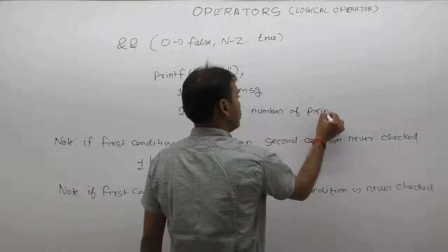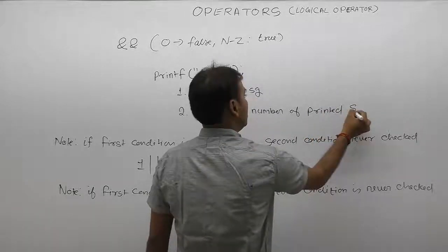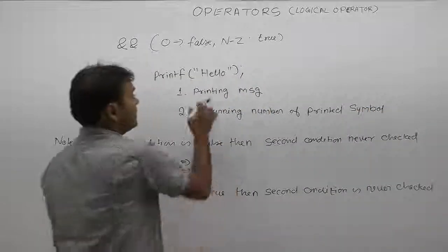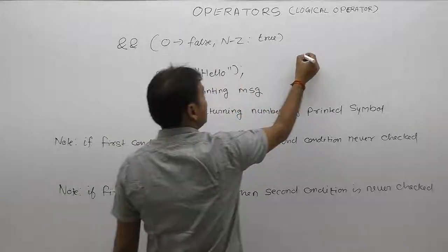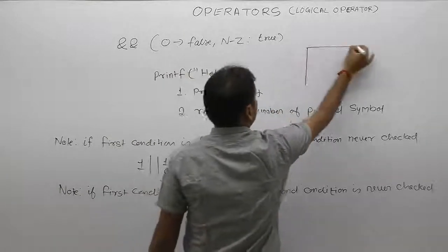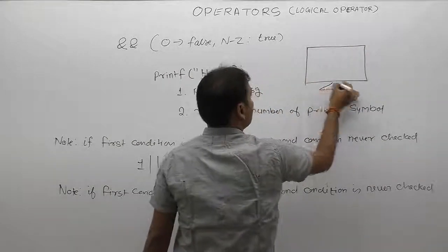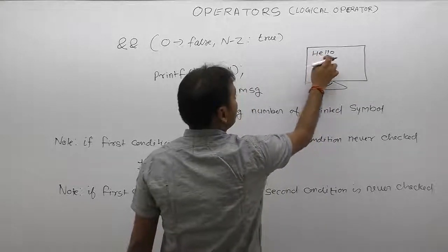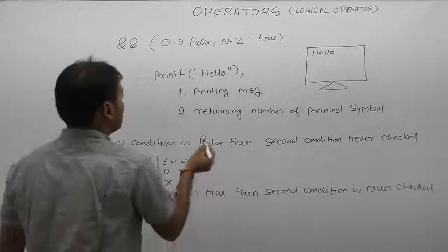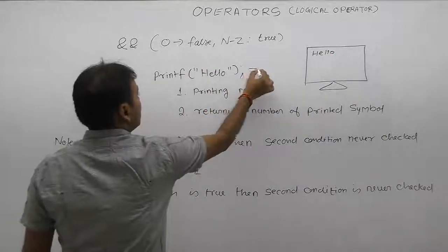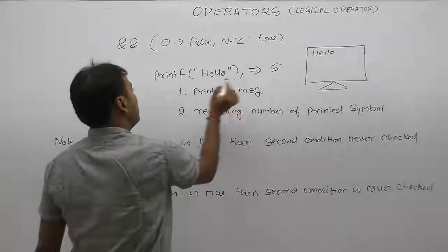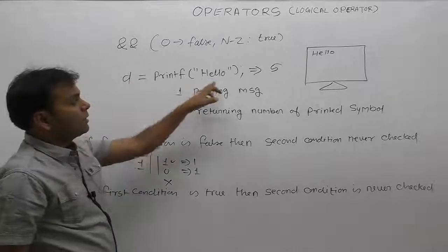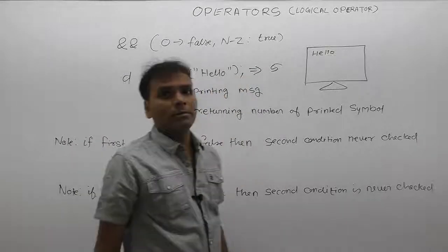Based on these properties, we will discuss logical programs. For example, if the message is 'hello', it will first display 'hello' on the monitor. How many symbols are there? There are five symbols — one, two, three, four, five. So printf will return five. In this case, when d is used, according to the hello message, d is initialized by 5.